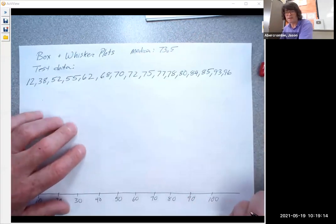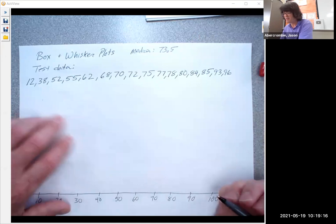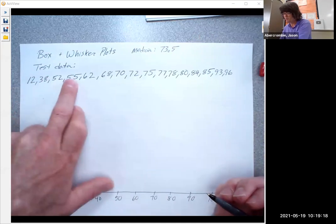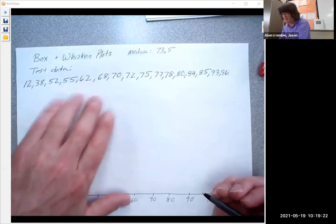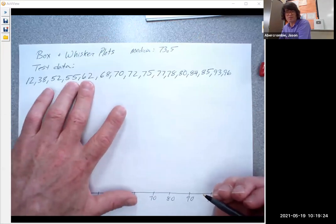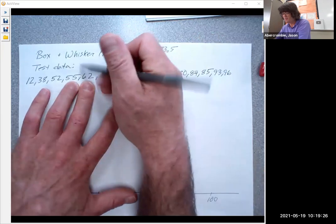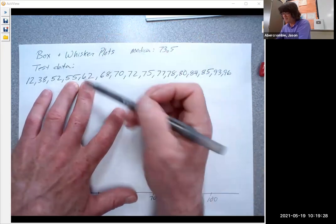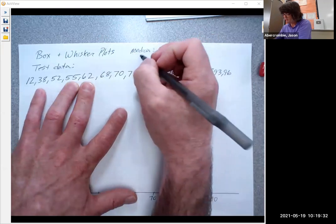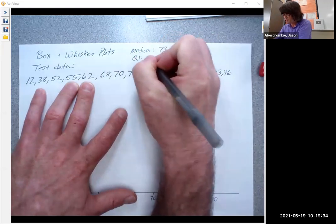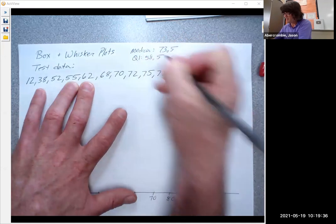For the quartile 1, we want 25% of the values. Counting 1, 2, 3, so that's 25% of the values are right there. And so that's going to be the average of these two numbers that kind of show me the cutoff of the bottom quarter. The average of 55 and 62 is going to be 58.5. Q1, 58.5.